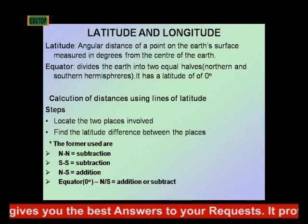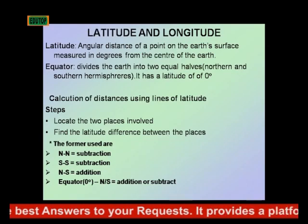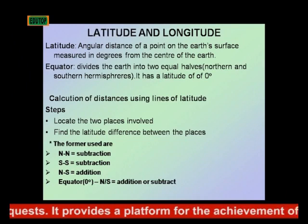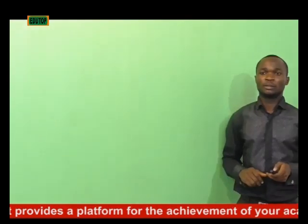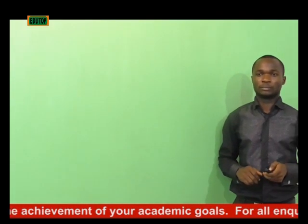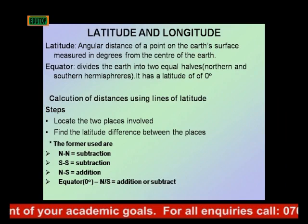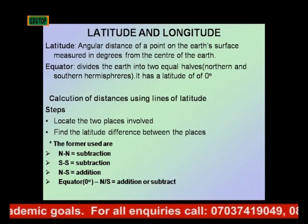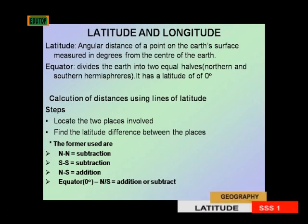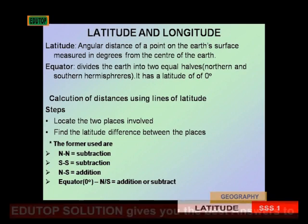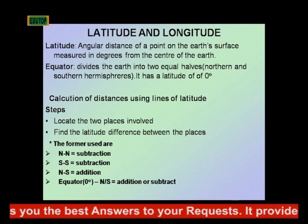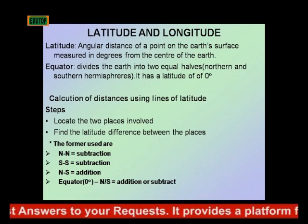Latitude is an angular distance of a point on the earth's surface measured in degrees from the center of the earth. It runs from east to west. The equator divides the earth into two equal halves — one at the top called the northern hemisphere and the one at the bottom which is the southern hemisphere.